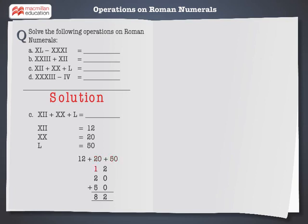The sum of 12, 20, and 50 is 82. Now convert the sum into Roman numeral. 82 is equal to LXXXII. Hence,